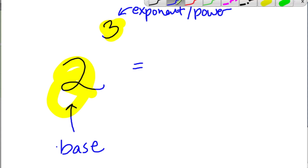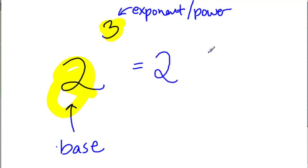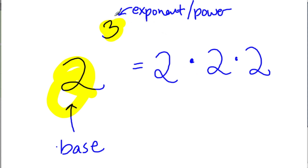It really just means to take the number as the base and write it down three times and then multiply those numbers. The reason we write it down three times is because we're using the exponent or the power as a guide. If it was a 4, we'd write down the base four times and multiply it. Here, with a base of 2 and an exponent of 3, it's 2 times 2 times 2, which is 8.